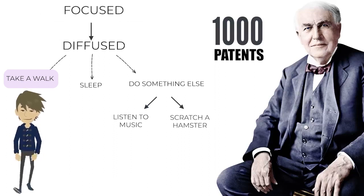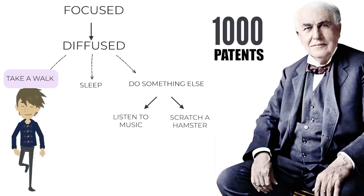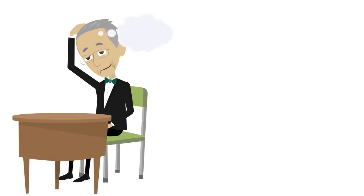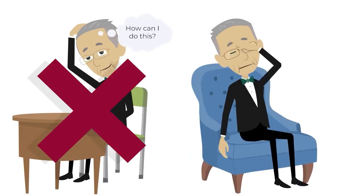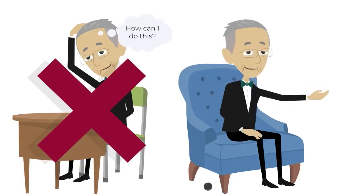When you return to the problem, you'll notice how easy it is to find a solution, or you'll realize you've advanced in understanding. Edison's secret was that when solving complex problems, he did not dwell on finding a solution. He went to take a nap in his armchair in the living room, having previously taken a bearing in his hand. As he fell asleep and the bearing fell from his hand, the scientist would wake up and grab the thoughts that had come into his relaxed brain to use for new inventions.